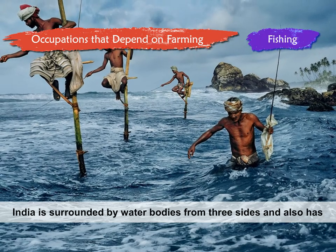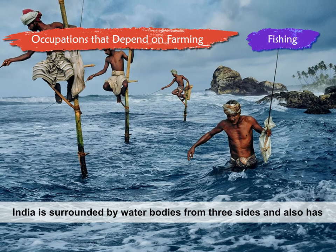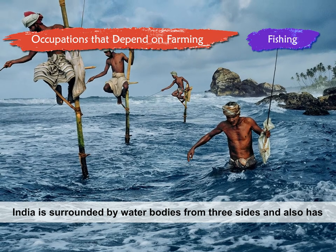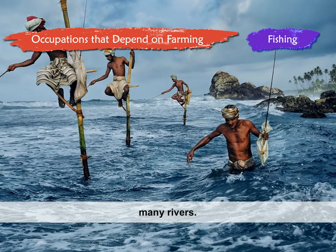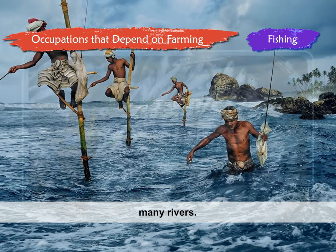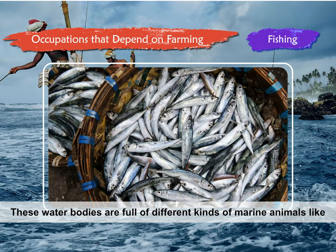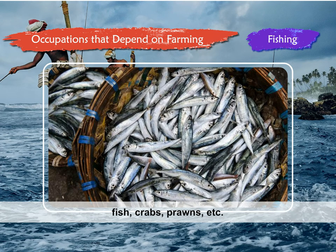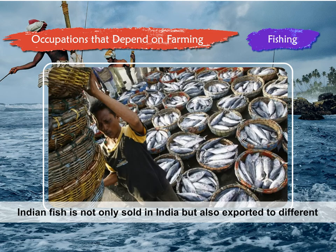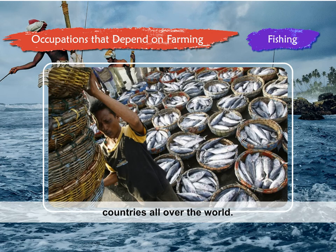Fishing. India is surrounded by water bodies on three sides and also has many rivers. These water bodies are full of different kinds of marine animals like fish, crabs, prawns, etc. Indian fish is not only sold in India but also exported to different countries all over the world.